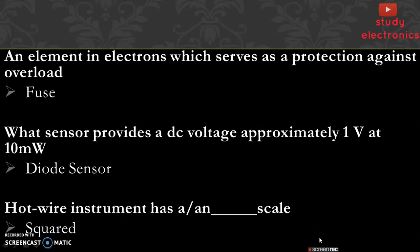Next question: an element in electronics which serves as a protection against overload. The protection against overload element used is fuse. Next, what sensor provides a DC voltage approximately 1 volt at 10 millivolt? Diode sensor.